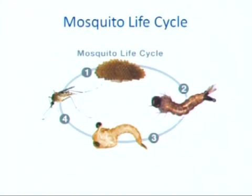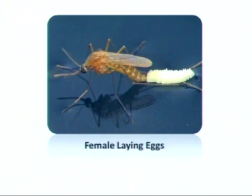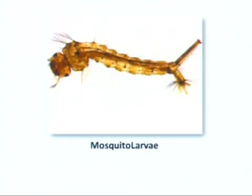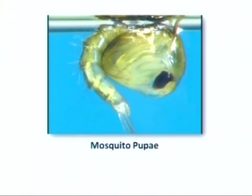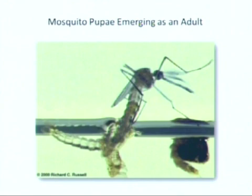The female lays eggs in rafts on top of stagnant water. Within a few days, the eggs hatch into larvae. Larvae, or wigglers, come to the surface to breathe through a siphon tube and feed on organic material in the water. Pupae, also called tumblers, somersault through the water but do not eat at this stage. The adult mosquito grows inside the pupae and, when fully developed, splits the pupal skin and emerges as an adult.